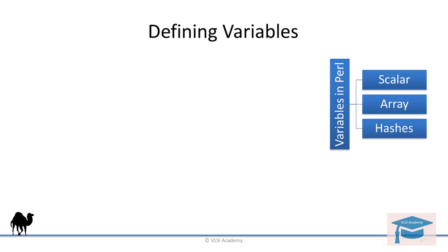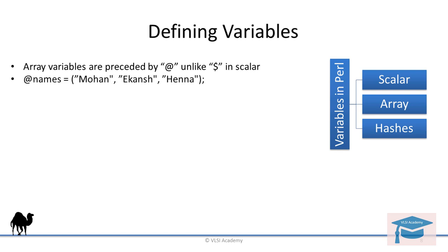Now let's move on to defining array variable types in Perl. An array is a variable that stores an ordered list of scalar values. Array variables are preceded by @ unlike $ in scalar. So let's see how to define the arrays. @names is equal to Mohan, Ekansh and Henna. These are the values of array elements which are stored in the array named names.